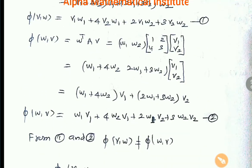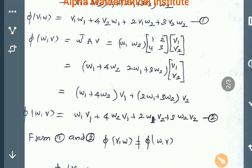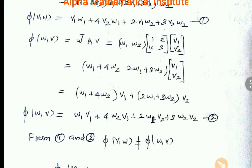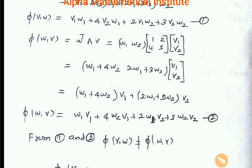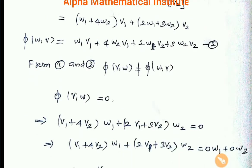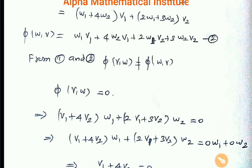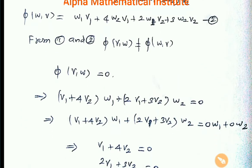Looking at Equation 1 and Equation 2, we get that φ(V, W) is not equal to φ(W, V). So the first option is the wrong option.